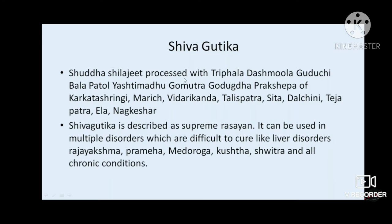In Shiva Guttika, Shuddha Shilajit is processed with triphala, dashamula, guduchi, vala, patola, yashti, madhu, gomutra, along with prakshep of karkatashingi, maricha, vidarikandha, dalchini, tejpatra, ela, and Maheshwarvati. It is considered a supreme rasayana and can be used in multiple chronic disorders like liver diseases, rajayakshma, prameha, medoroga, kushtha, svitra, and all types of chronic conditions.